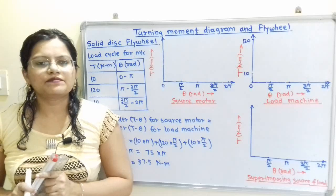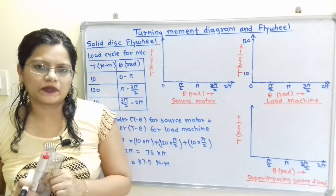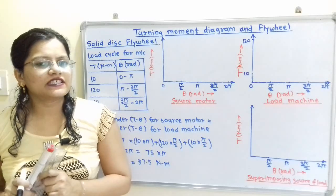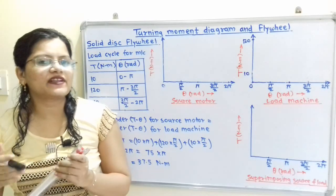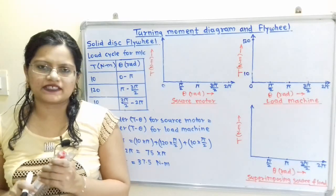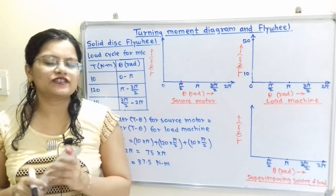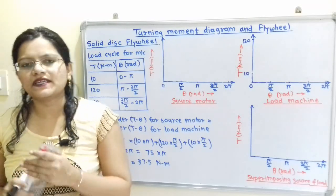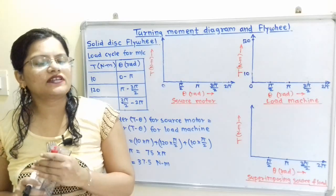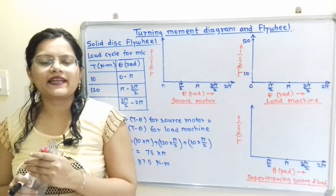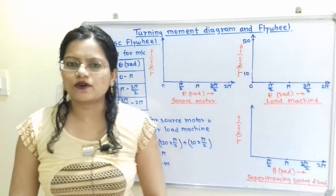The flywheel is mounted between the source motor and load machine. As energy is absorbed from the source motor, flywheel speed increases. When energy is released to the load machine, flywheel speed decreases. We have to first draw the turning moment diagram for the source motor as well as the load machine.